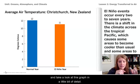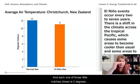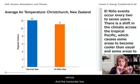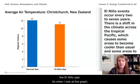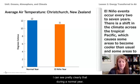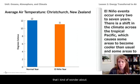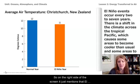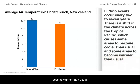Let's pause and take a look at this graph in a bit of detail. There is a vertical axis with data in degrees Celsius, and each one of those little notches is two degrees Celsius. The horizontal axis shows the labels for the two bars — the blue bar is the normal year and the orange bar is the El Niño year. I can see pretty clearly that during a normal year the average temperature is 12 degrees Celsius, and during an El Niño year it's only 11 degrees Celsius — that's only one degree Celsius difference. On the right side of the screen, it mentions that El Niño events occur every two to seven years, and there's a shift in the climate across the tropical Pacific, which causes some areas to become cooler than usual and some areas to become warmer than usual.